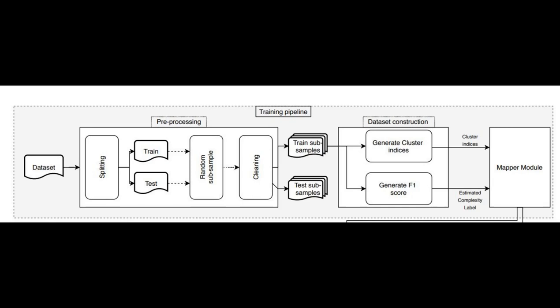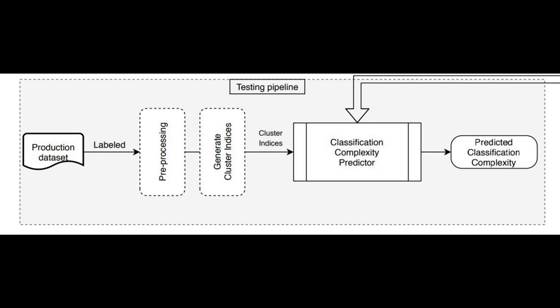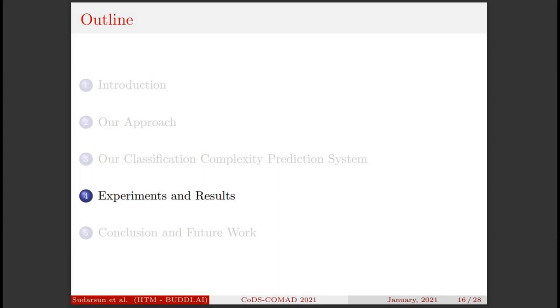Moving on to the testing pipeline. Here, we try to determine the classification complexity label for an unknown test dataset. This test dataset undergoes the same standard preprocessing procedures and clustering indices are extracted from this dataset. These indices are passed on as input to our classification complexity predictor, which was obtained from the training pipeline. The predictor estimates a complexity label for this unknown test dataset. Next is the experiments and results section.